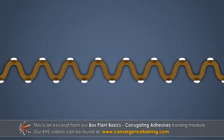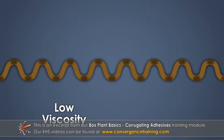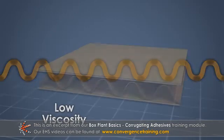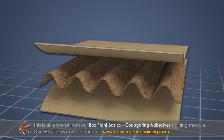If the adhesive paste is too thin or has low viscosity, the water in the adhesive will quickly wick into the medium and there may not be enough water present for the uncooked starch to gelatinize. The board exiting the corrugator may be dry and brittle, with poor bonding.